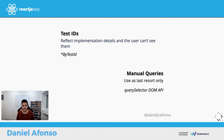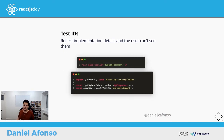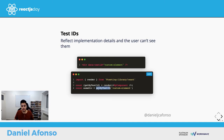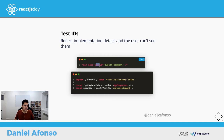For a test ID example: we add a data-testid='custom-element' to our div. We render the component, destructure getByTestId, and call getByTestId('custom-element') — it walks the DOM, finds it, and returns the div. Note: you don't always have to use data-testid — there's a configure function from the Testing Library you can call in your setup to set the test ID attribute to whatever you want.